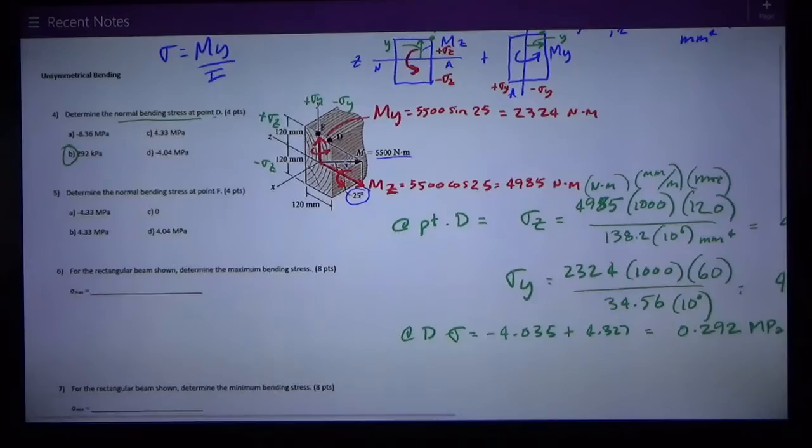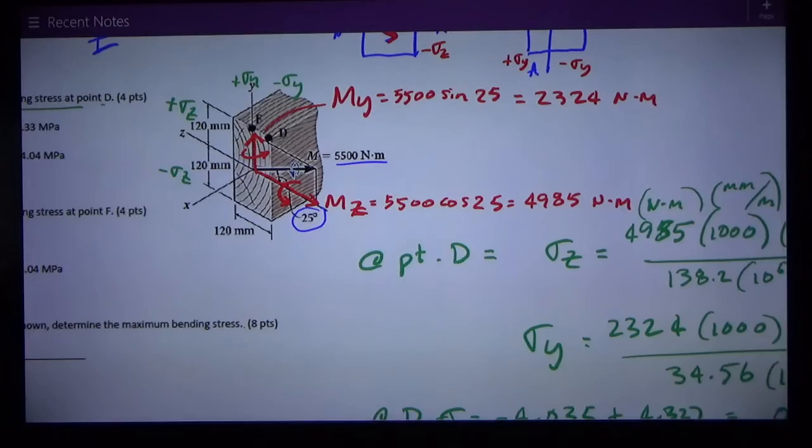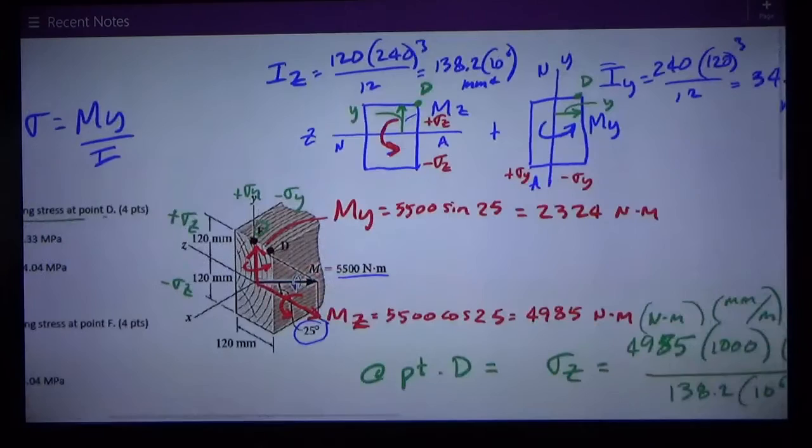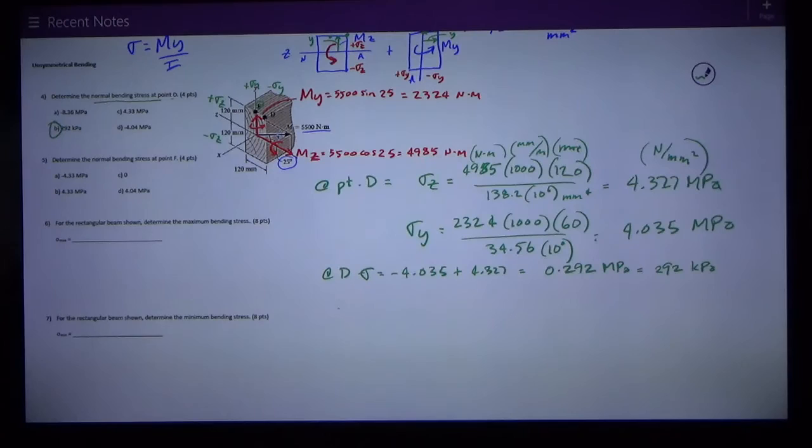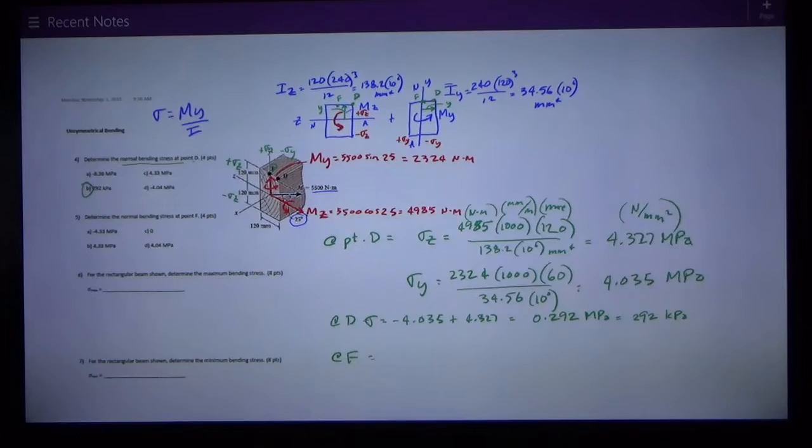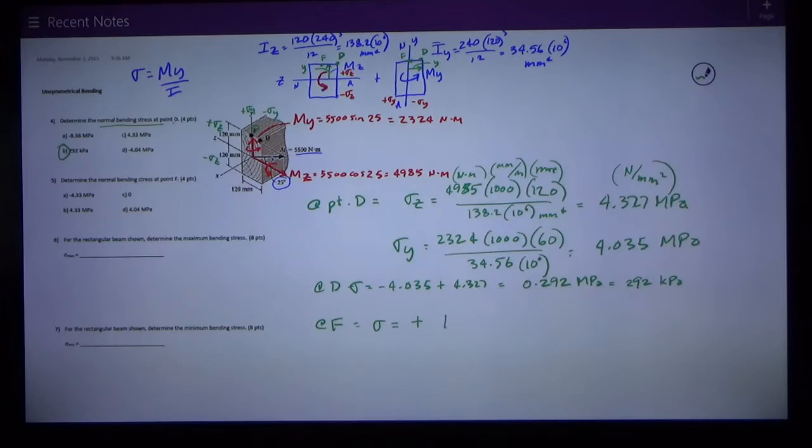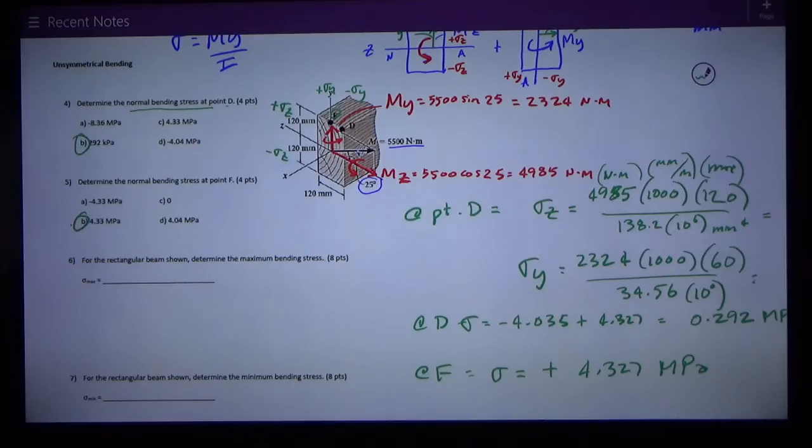At point F I also want to know the bending stress in question five and I observe that it lies on the y neutral axis. Point F lies right on the neutral axis for y. Same location relative to the z neutral axis as D was. So all I have at F is positive σz. That's just positive 4.327 megapascals. That was answer B.